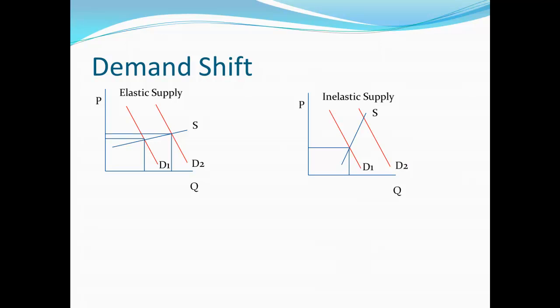When we look at the case of elastic supply, we notice that our equilibrium has shifted such that there's a relatively small change in prices, but a huge change in the quantity. This makes sense — elastic supply suggests that a relatively small change in prices is enough to convince suppliers to provide a lot more of the good. So we get small changes in prices and relatively large changes in quantities if supply is elastic. On the other hand, if supply is inelastic, we tend to see exactly the opposite: a very large increase in prices with a relatively small increase in quantity. If our suppliers are not very responsive to changes in prices, then if there's an increase in demand, prices are going to have to change a lot to convince suppliers to produce any more of the good to meet that demand.